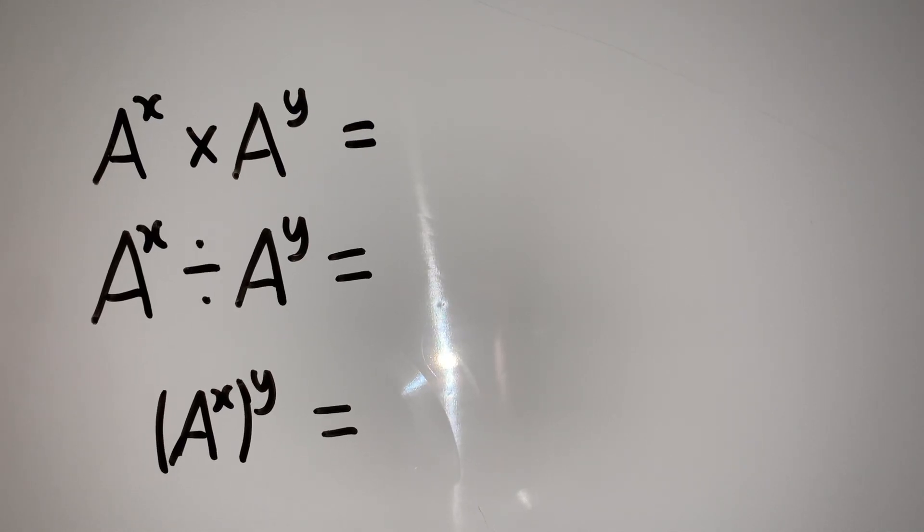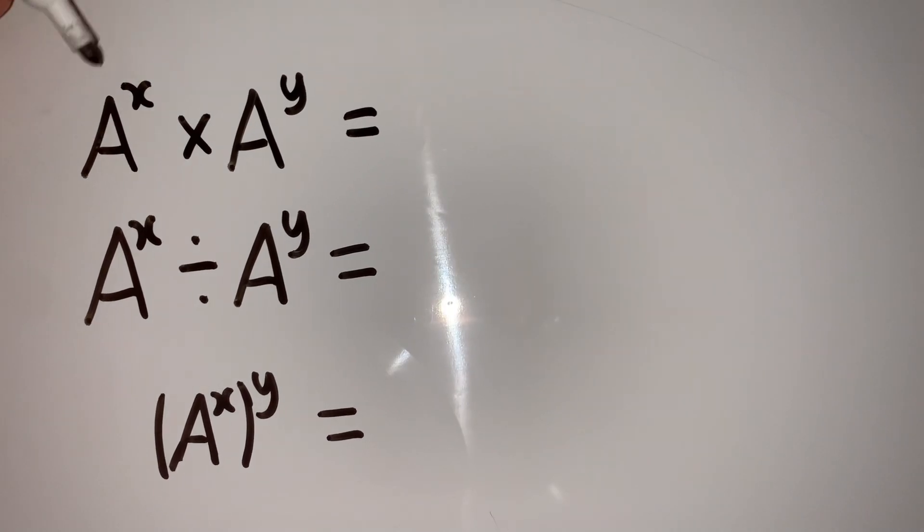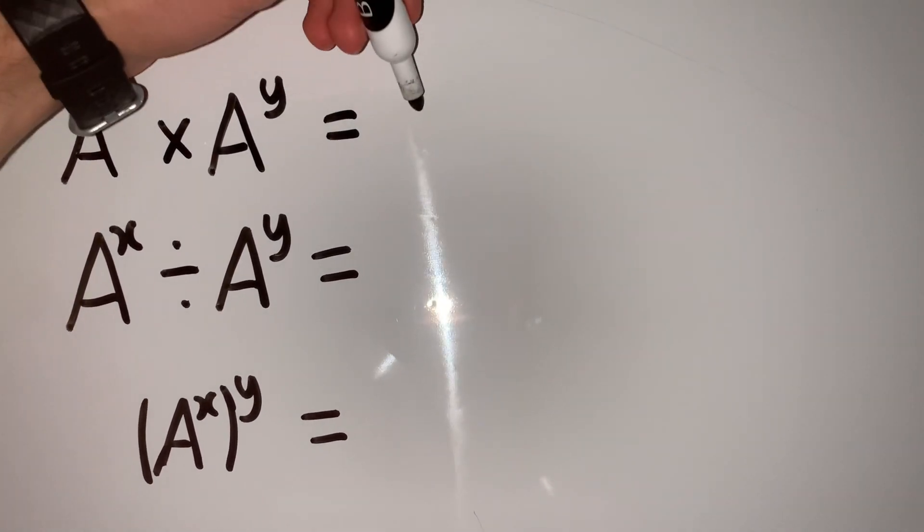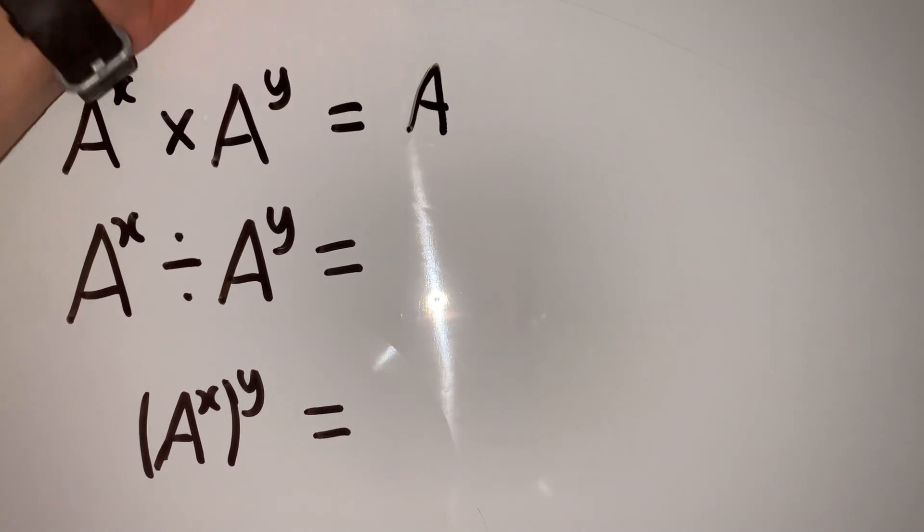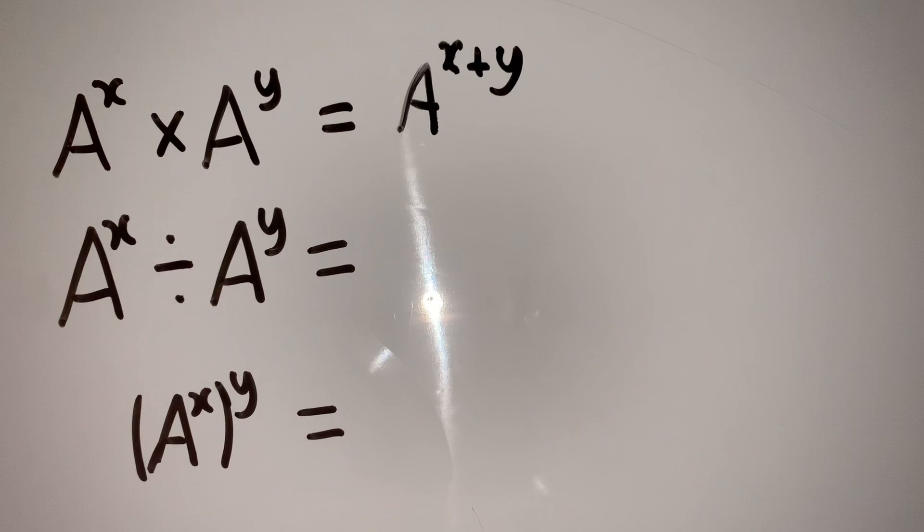Here's a quick video going through the laws of indices and some examples. Let's go through the first rule. If we have the same number being raised to two different powers and we multiply them, the result is going to be that number and then you add the powers together.